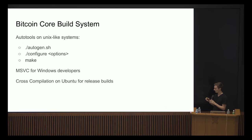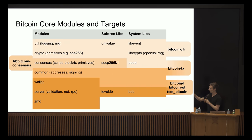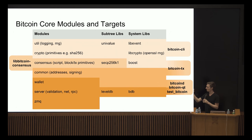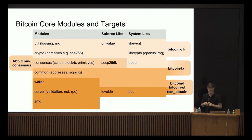For our release builds we use cross-compilation, which is currently only supported on Ubuntu. Looking at all the modules and targets our build system supports — James was talking about regions, and in the build system they're called modules. There are some basic modules like util, which handles logging or random number generation, or crypto primitives which provide hash functions.